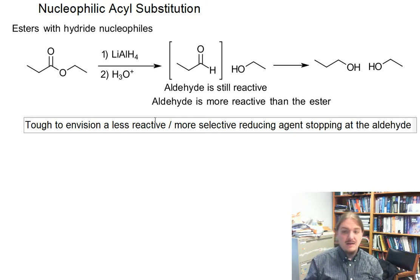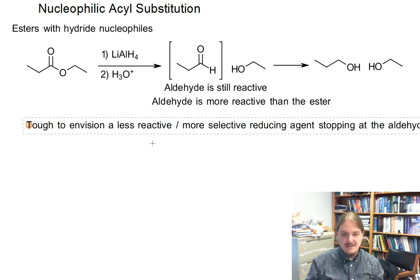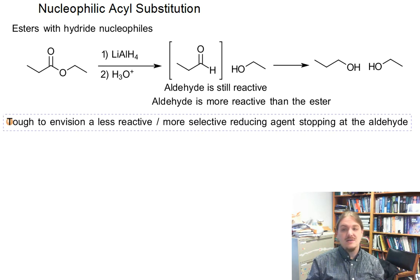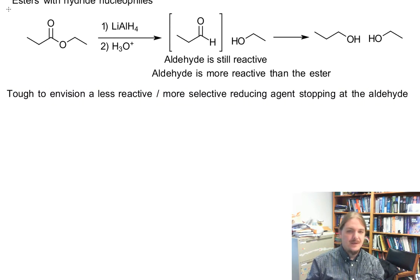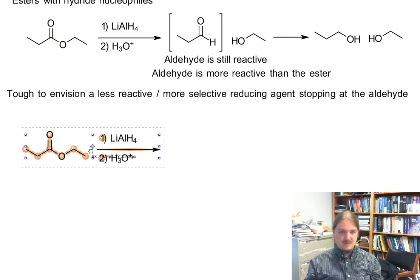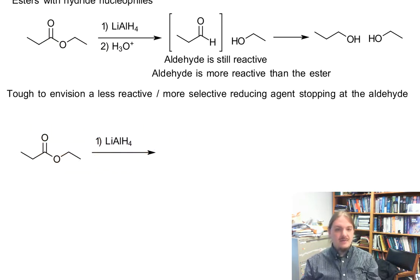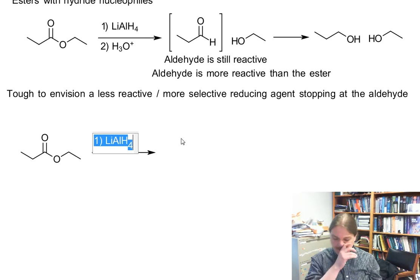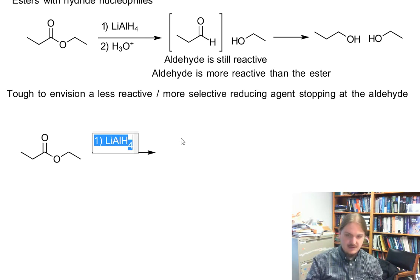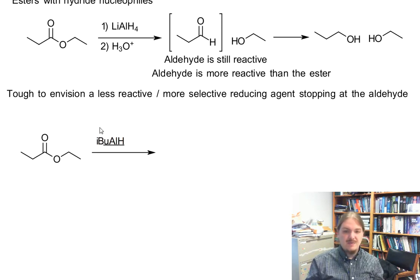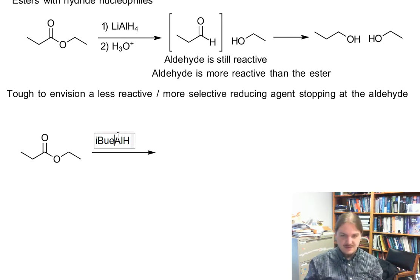It can stop at the aldehyde. But in fact, one such exists, and the way that it works is pretty interesting. So there is one that works and it stops at the aldehyde, and it can be written this way. Isobutyl di — this is diisobutyl aluminum hydride.